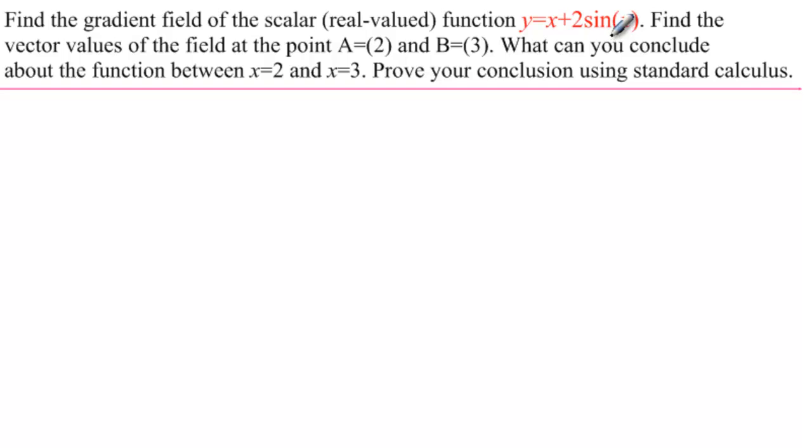y equals x plus 2 times sine of x. And we're going to find the vector values of this field at the point a equal 2, that's x equal to 2, and b equal 3, x equal to 3. And we're going to see if we can conclude anything about the function between x equal to 2 and x equal to 3, that is between these two points. And then we're going to prove our conclusion using standard calculus, which we know very well.